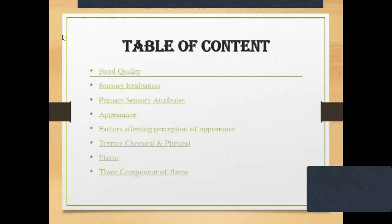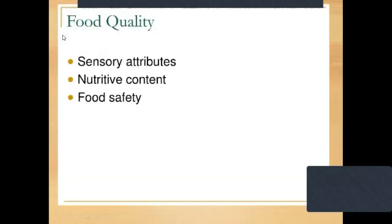Food quality is classified into three terms: first is sensory attribute, second is nutrient content, and third is food safety.